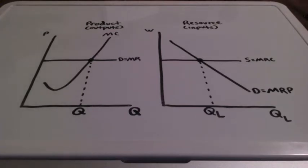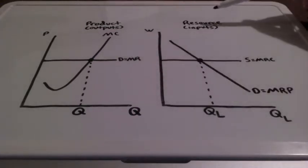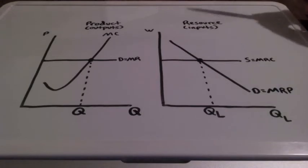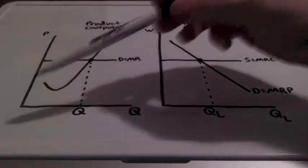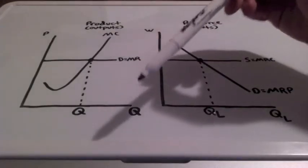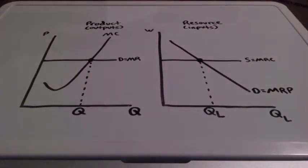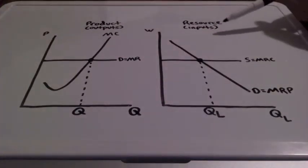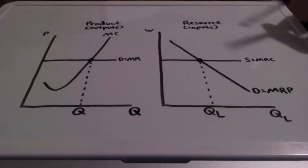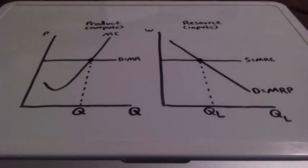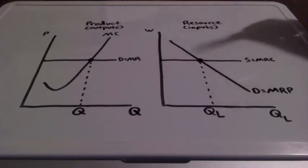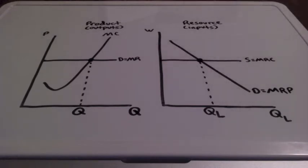In this lesson, we're going to compare and contrast the product market with the resource market. The product market deals with outputs that the firm is going to produce — the quantity that the firm is going to produce. In the resource market, we're talking about inputs: the quantity of labor that is needed to produce goods and services, the quantity that will be hired by a firm.